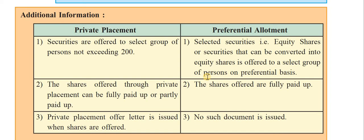Comparing private placement and preferential allotment: First, in private placement, securities are offered to a select group not exceeding 200; in preferential allotment, equity shares or convertible securities are offered to a select group on preferential basis. Second, shares in private placement can be fully or partly paid up; in preferential allotment they are fully paid up. Third, a private placement offer letter is required; no such document is required in preferential allotment.